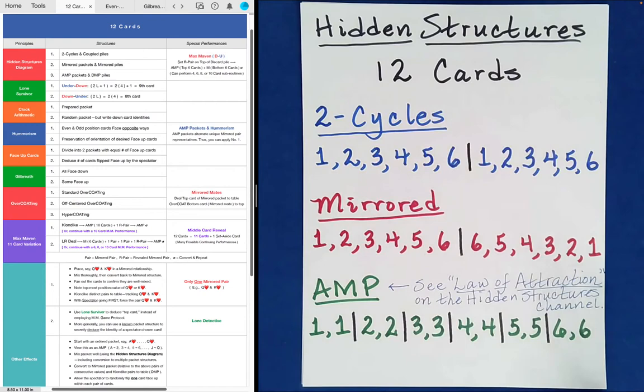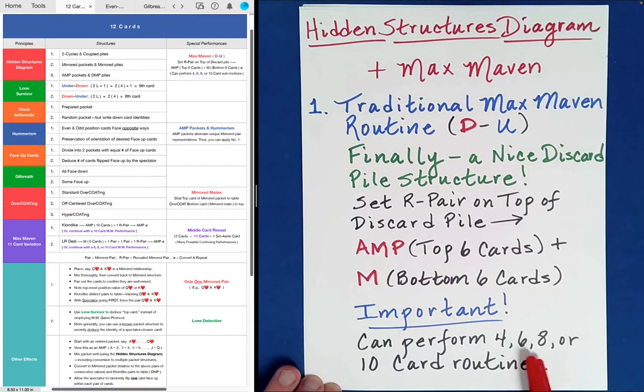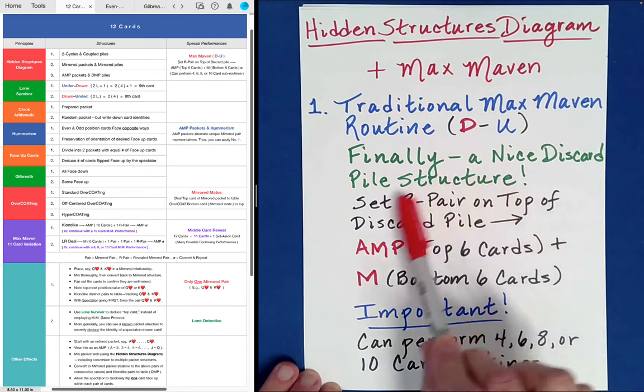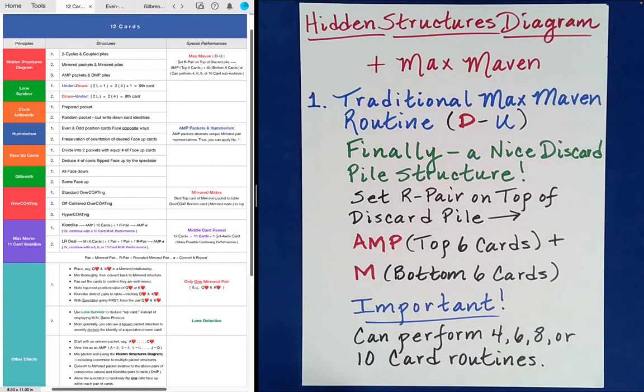I thought we would quickly begin with a traditional Max Maven routine. And so this is where we need 12 cards, because that's the number we're looking at. Now, unlike the traditional Max Maven routines in the past, the discard pile this time will actually be fairly nice. Half of the cards will be an AMP, and the other half will be a mirrored structure. So if you think back to some of the other routines we've done with 6 cards, and 8 cards, and 10 cards, you can do any of those on the heels of doing this one right here, by just selecting the right kinds of cards. And you can do that virtually with the cards face down, because you'll know the structure type. So let's quickly do a traditional Max Maven routine, but this time with 12 cards.